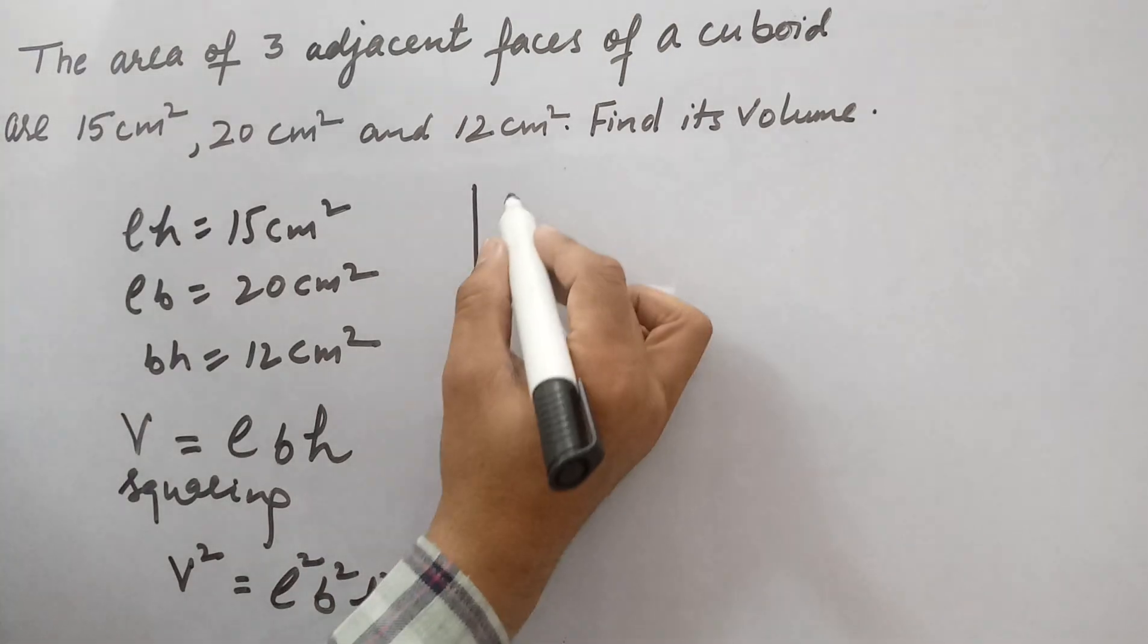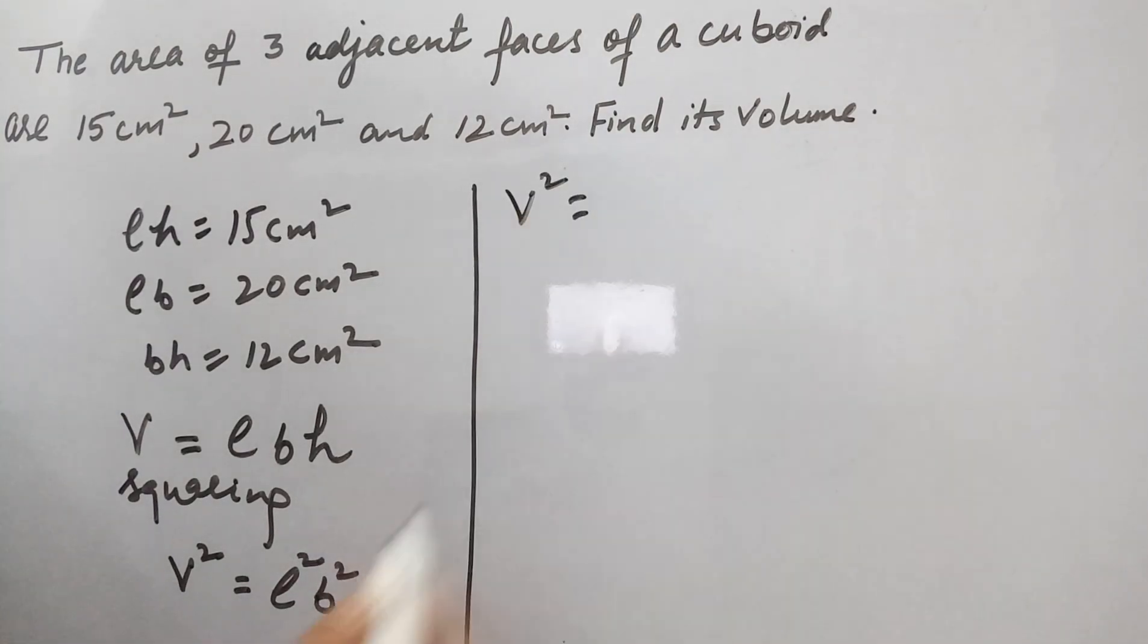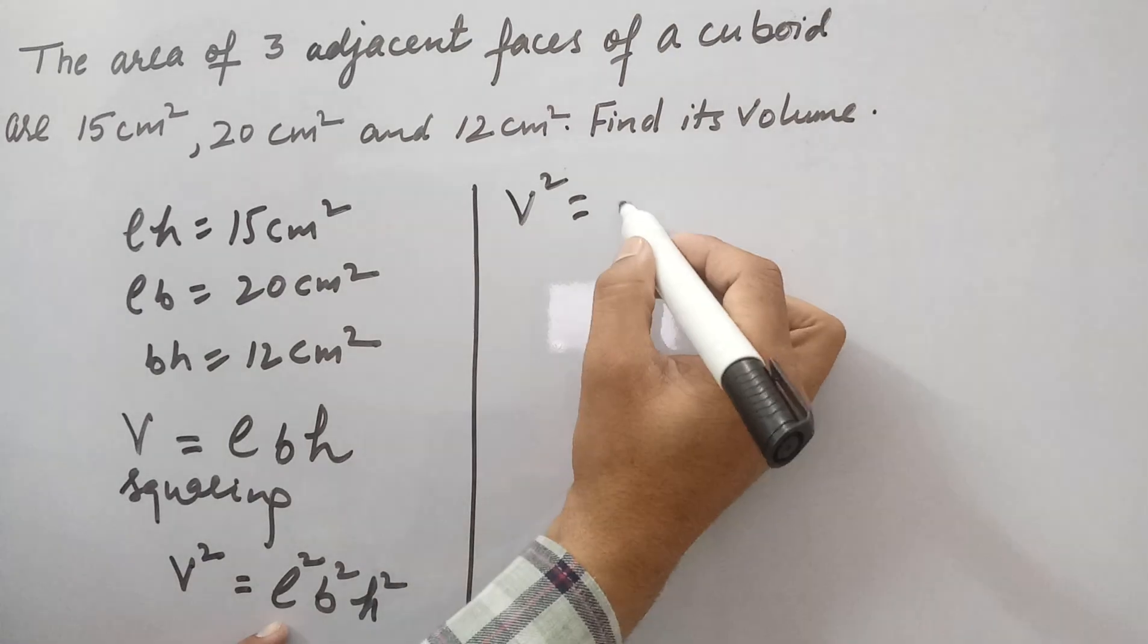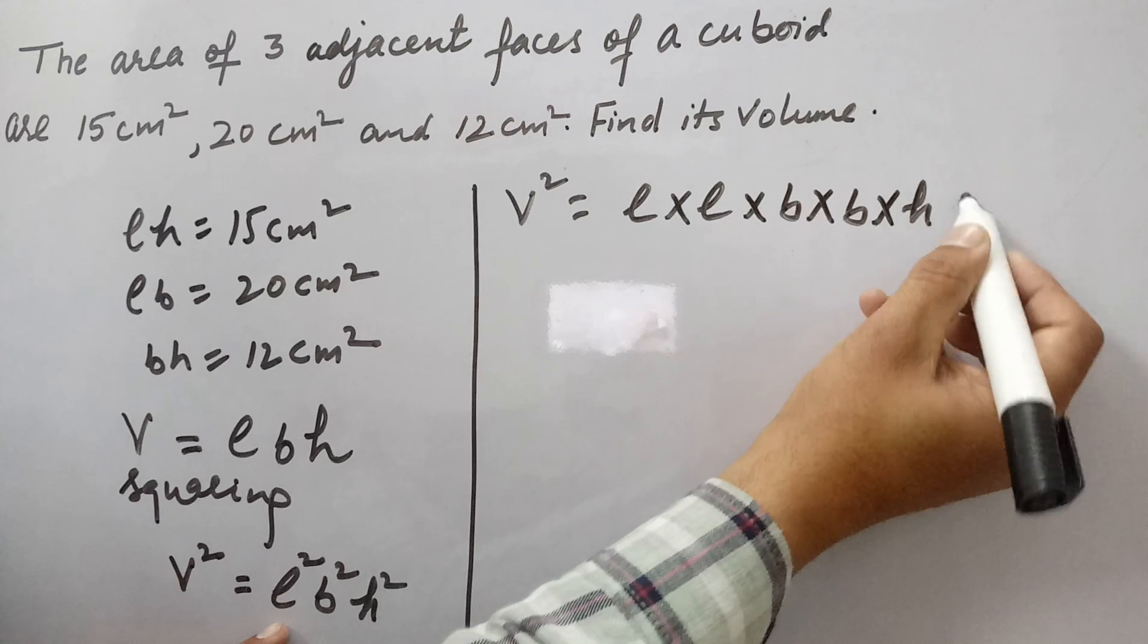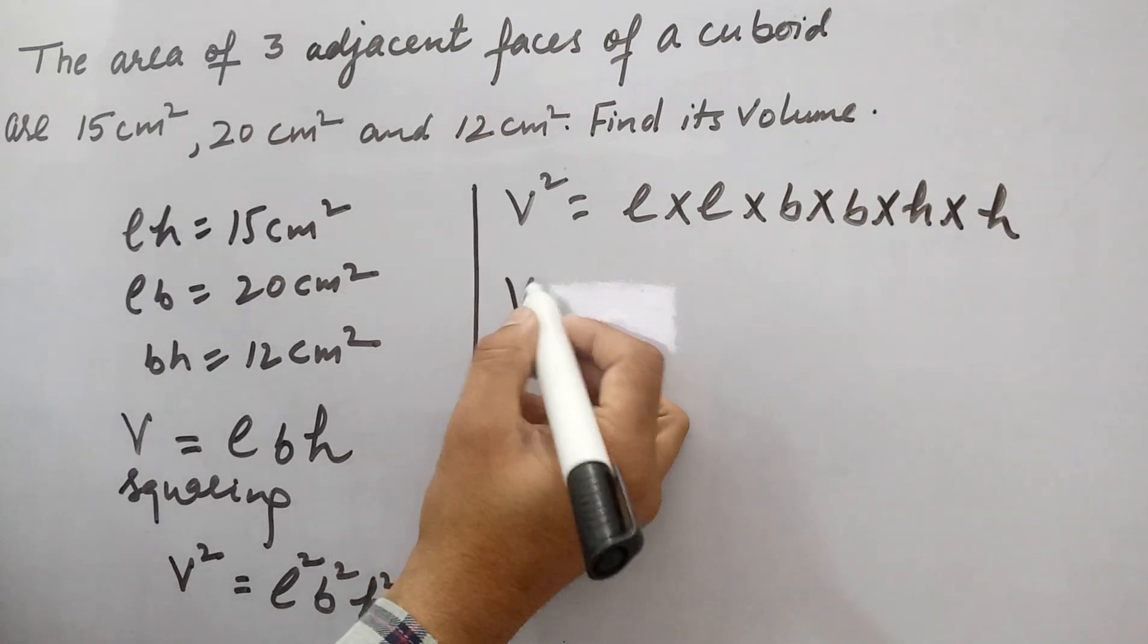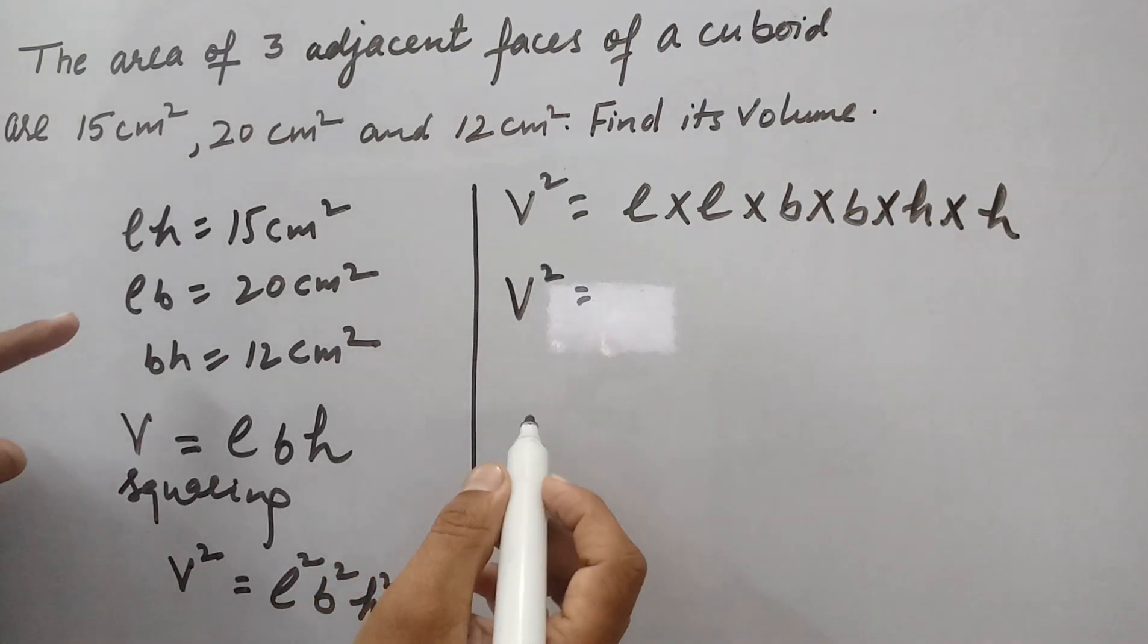So from here we can say that V² equals, we can expand this L into L into B into B into H into H. So make the suitable pairs like LH.